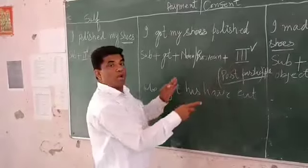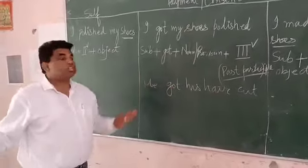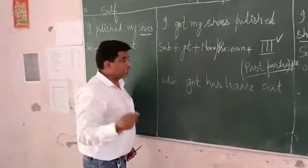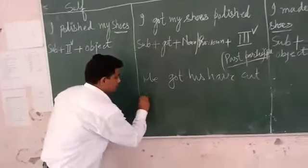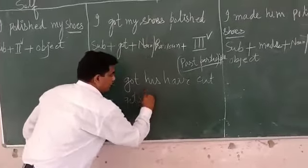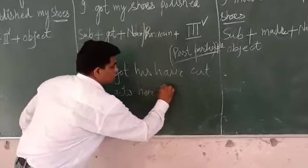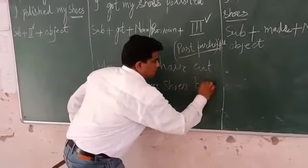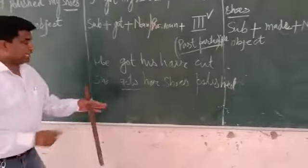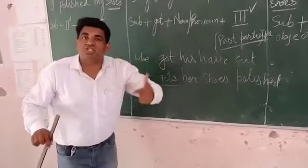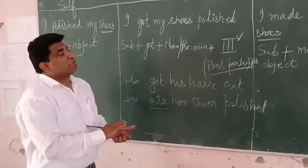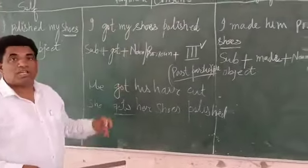The third form will always be used here and it will not change. However, the main verb can change according to tense. For example, in the present tense: 'She gets her shoes polished.' The main verb changes with tense, but the past participle stays the same.